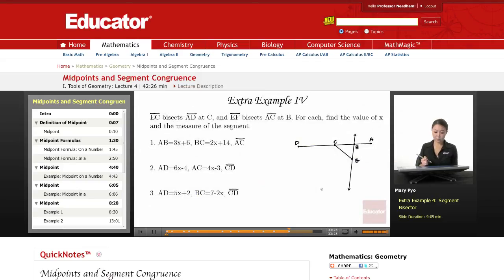Last example. EC bisects AD. Look at EC bisects AD. That means EC is the one that's doing the bisecting, and AD is the one that got bisected. That means AD is the one that got cut in half at C. That means this whole thing, AC and CD are congruent.